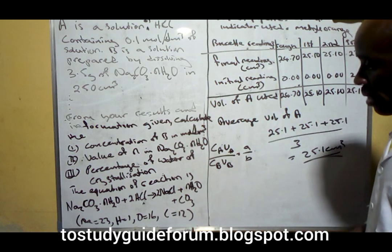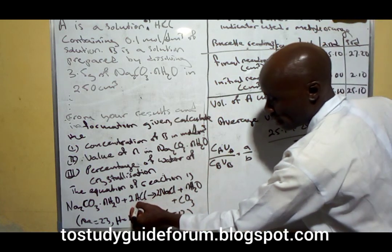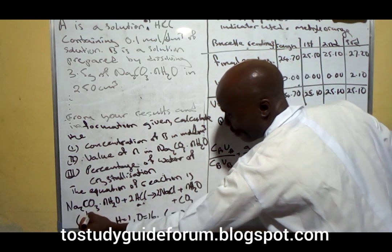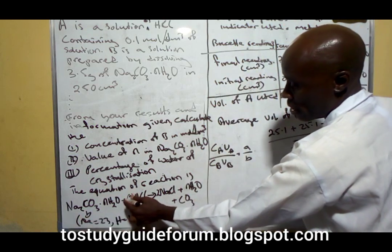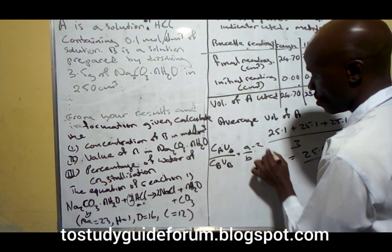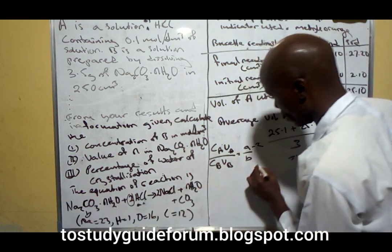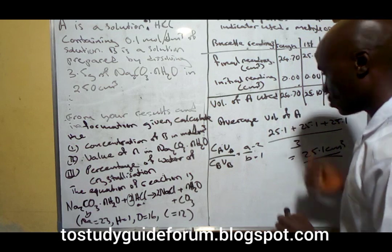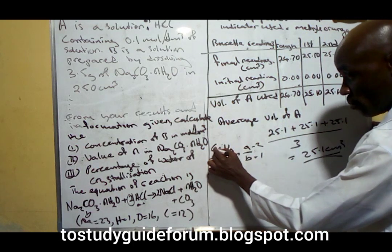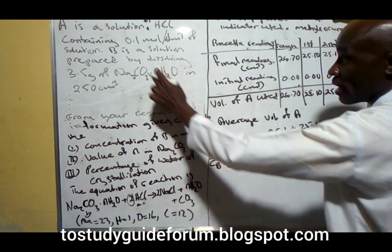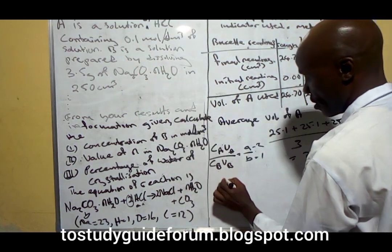From our equation, this is n for A, this is n for B. This one is 2, the coefficient here is 2. The second one coefficient is equal to 1. The concentration of the acid is what we have here and the volume is what we have here.